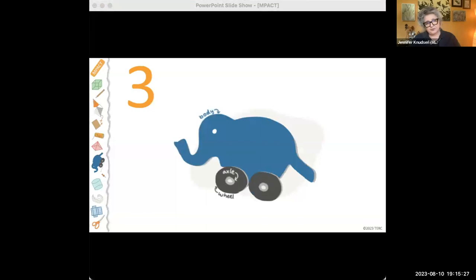So in module 3, students make a toy on wheels. And this is our little mascot elephant, who was based on a real toy, and a wonderful illustration was made for us. So they're aiming for a toy on wheels.